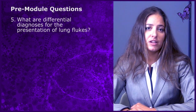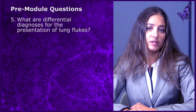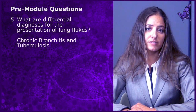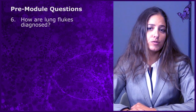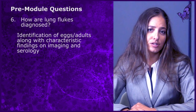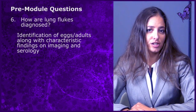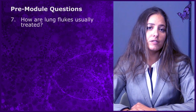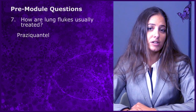Question number five: what are differential diagnoses for the presentation of lung flukes? The answer is chronic bronchitis and tuberculosis. Question number six: how are lung flukes diagnosed? The answer is identification of eggs or adults along with characteristic findings on imaging and serology. Question number seven: how are lung flukes usually treated? The answer is with praziquantel.